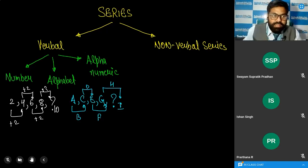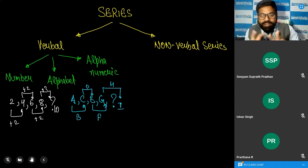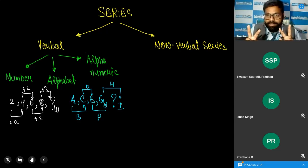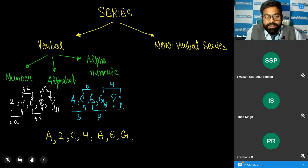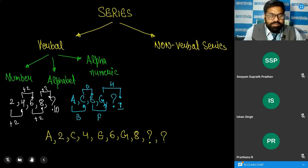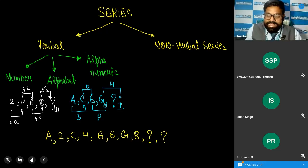For the alphanumeric series, the examiner combines both series — the alphabet series and the number series — into one, giving two different logics. For example, combining both gives: A, 2, C, 4, E, 6, G, 8, ?, ?. The correct answer is I and 10.